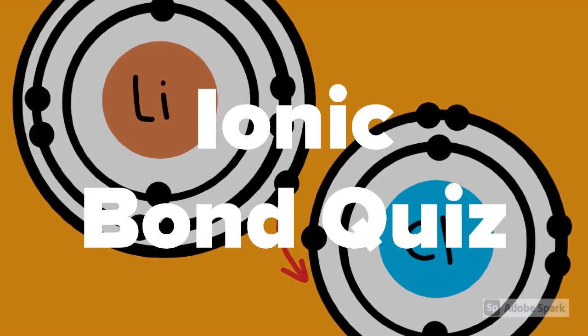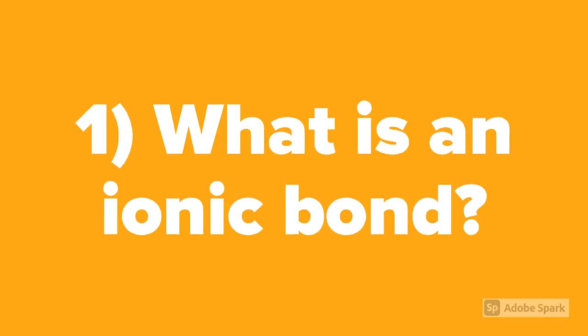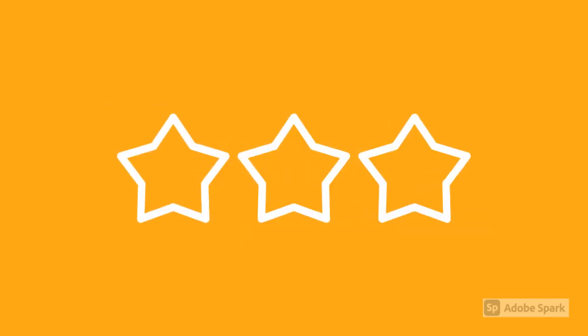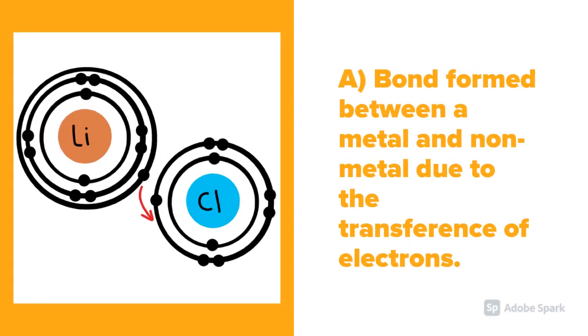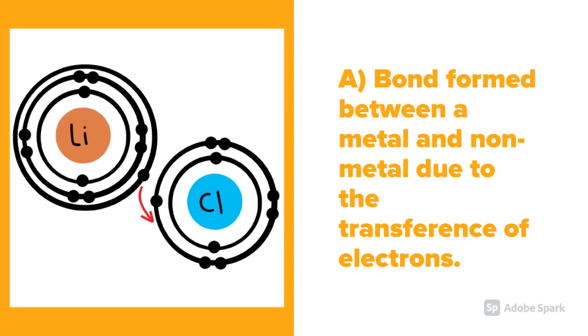Ionic Bond Quiz. Question number 1: What is an ionic bond? An ionic bond is a bond formed between a metal and a non-metal due to the transference of electrons.